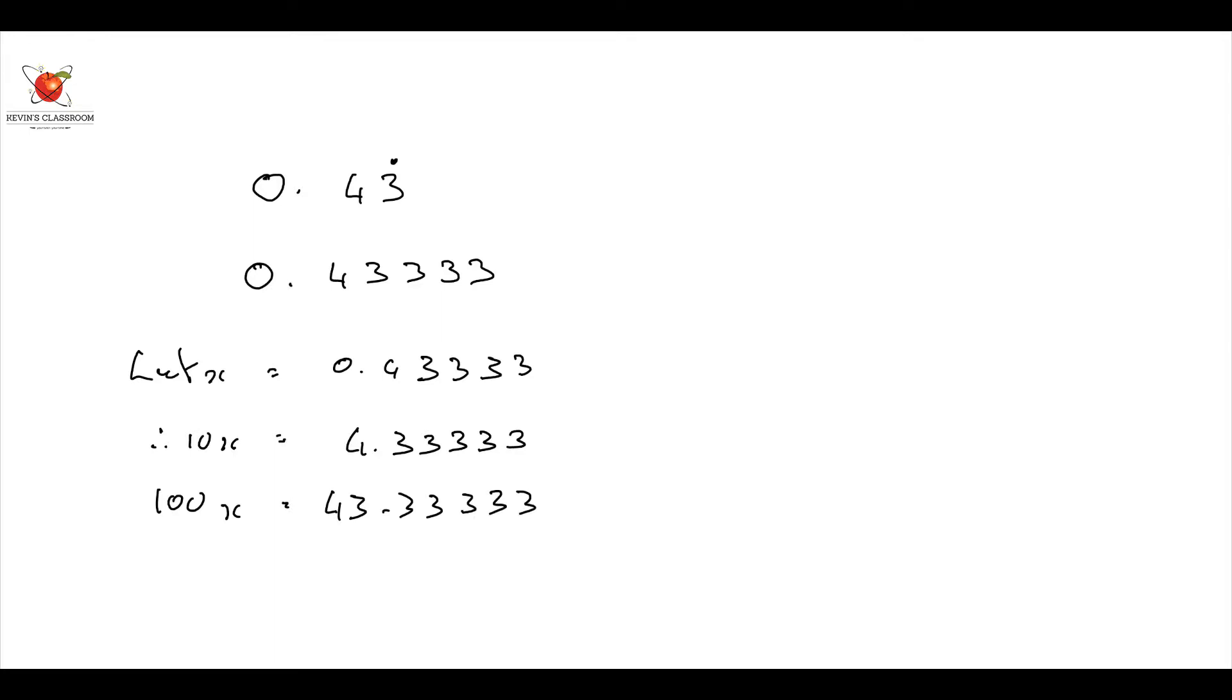What am I actually doing? Why am I doing this? Because what I want to do is get it to this point over here, where everything behind the decimal is recurring. Why? Because then I'm going to subtract the two.